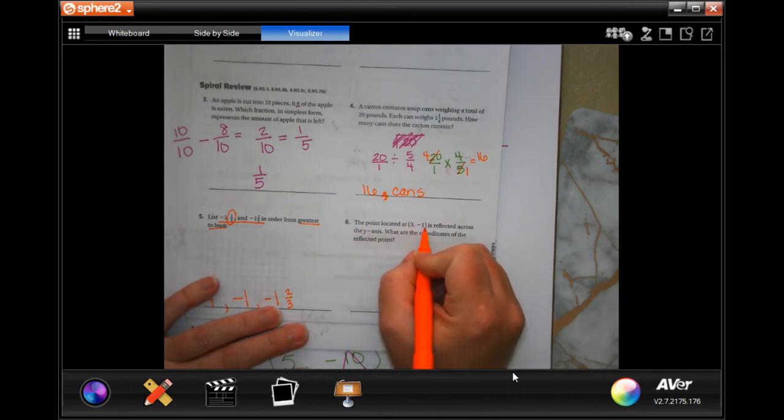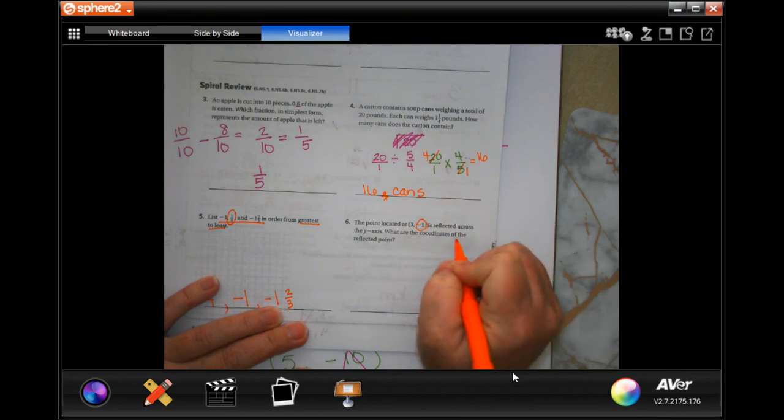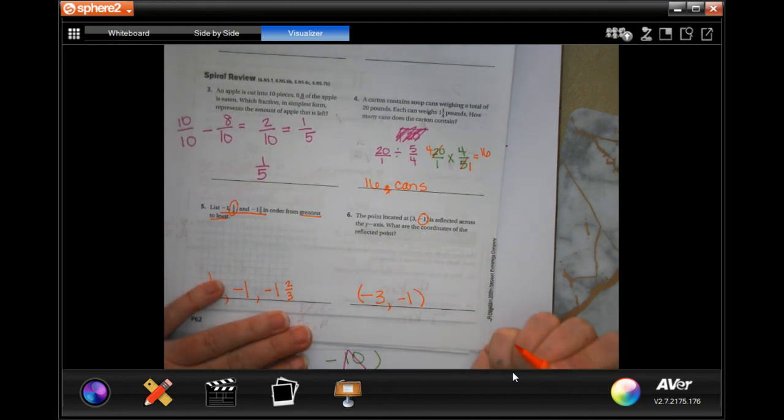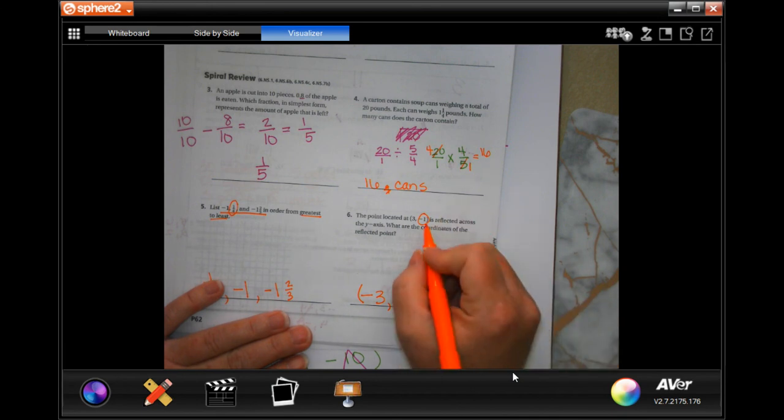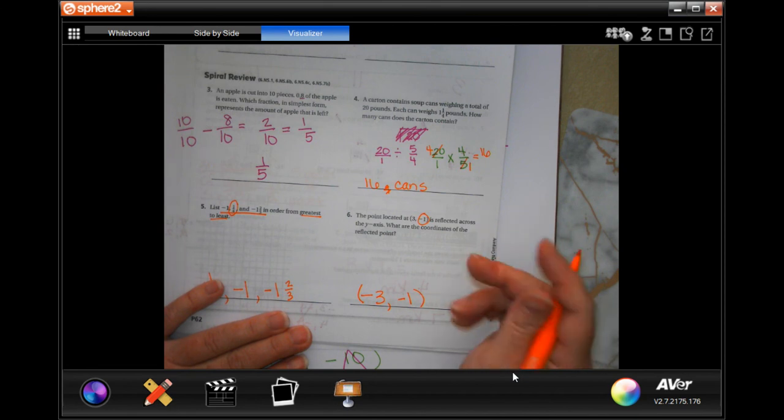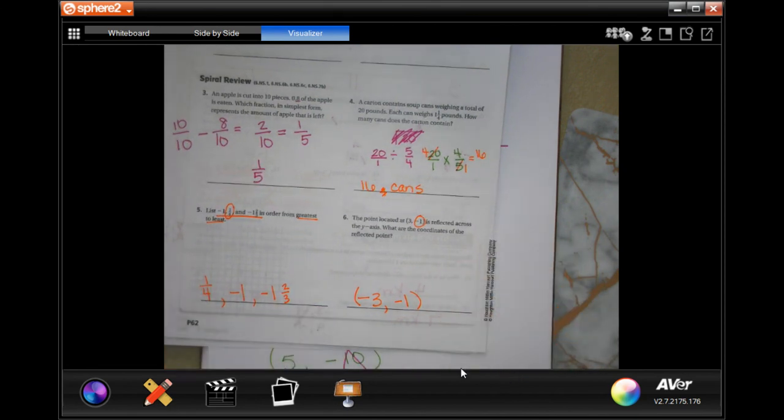The point located three, negative one is reflected across the y-axis. That means those ones are going to be the same. What are the coordinates of the reflecting point? Negative three, negative one. Don't forget, the y-axis stays the same, the other one is the one that changes.